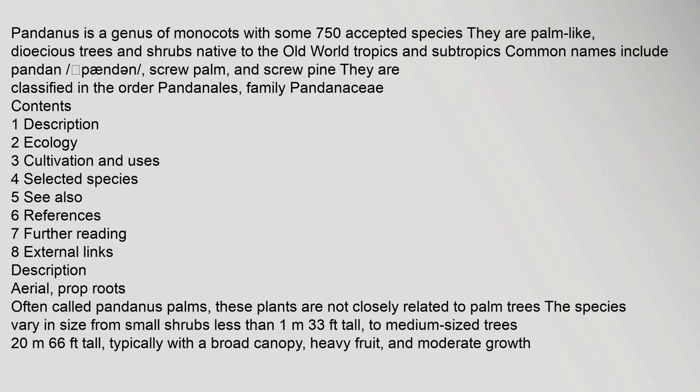Pandanus is a genus of monocots with some 750 accepted species. They are palm-like, dioecious trees and shrubs native to the Old World tropics and subtropics. Common names include pandan, screw palm, and screw pine. They are classified in the order Pandanales, family Pandanaceae.